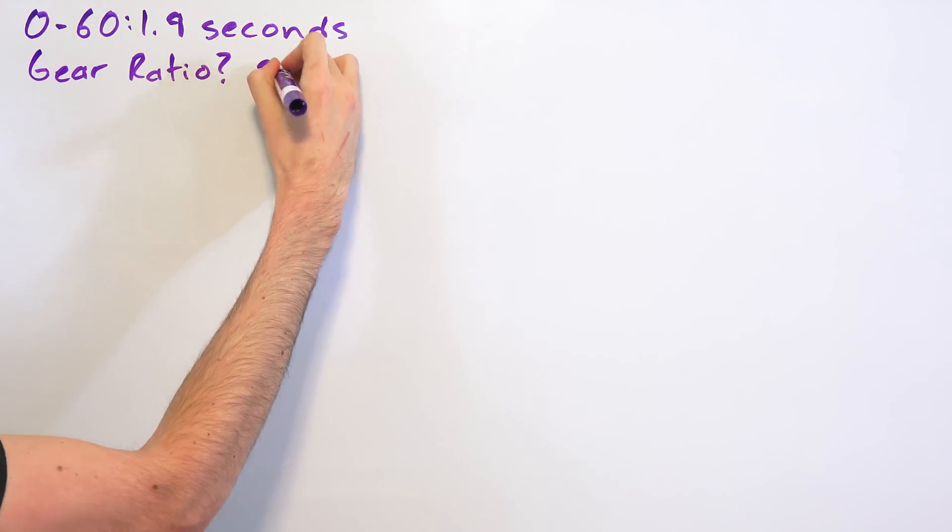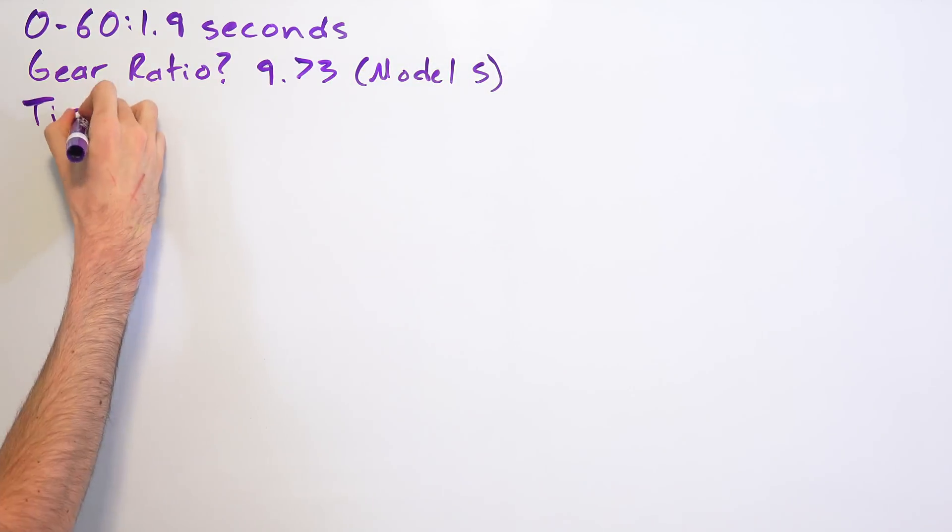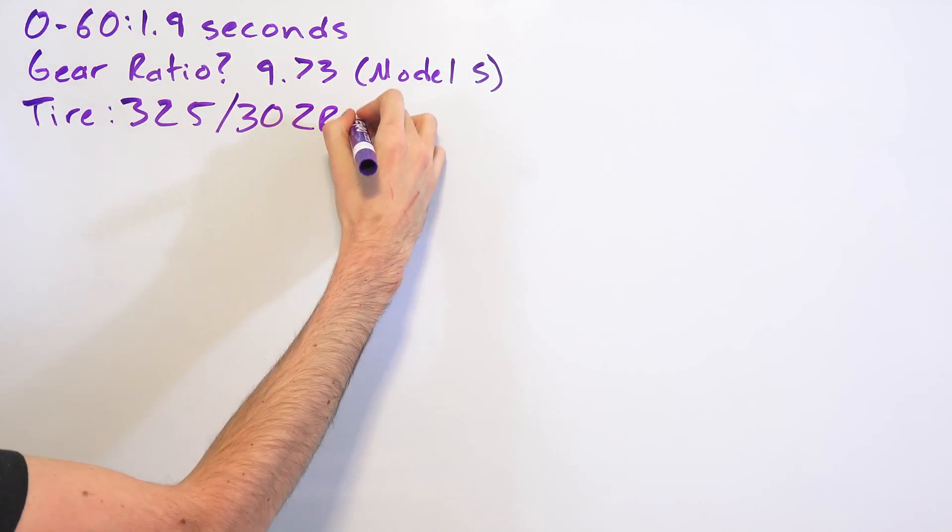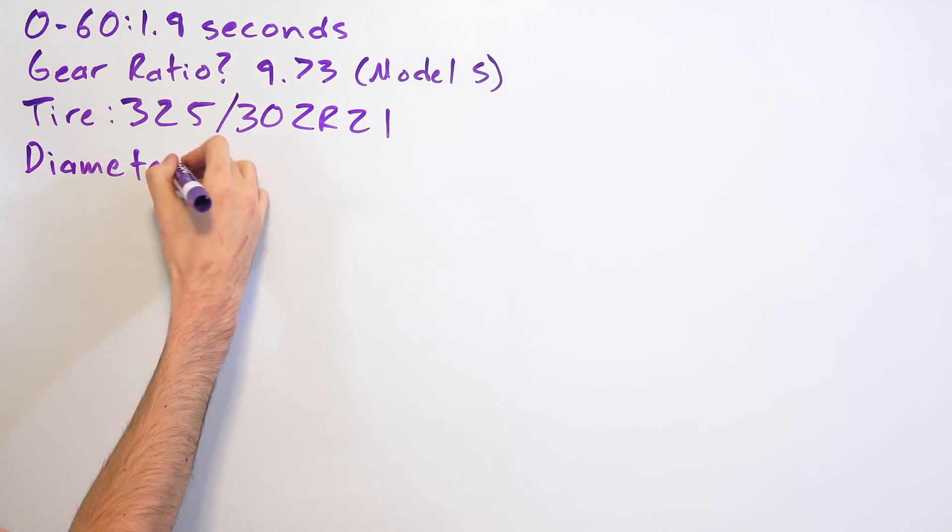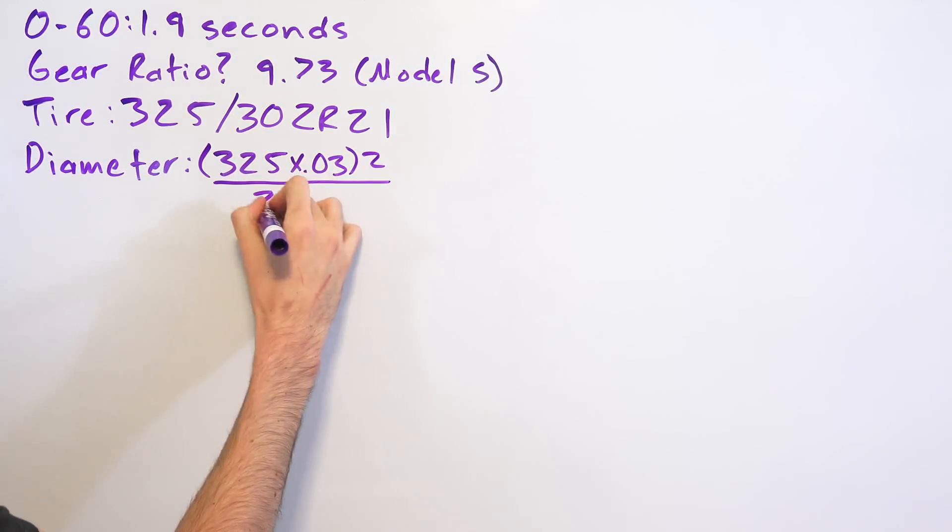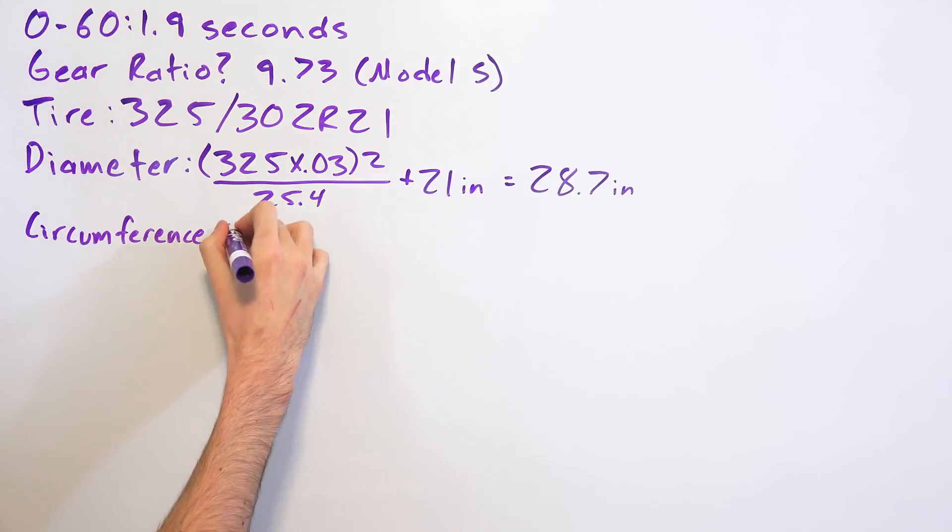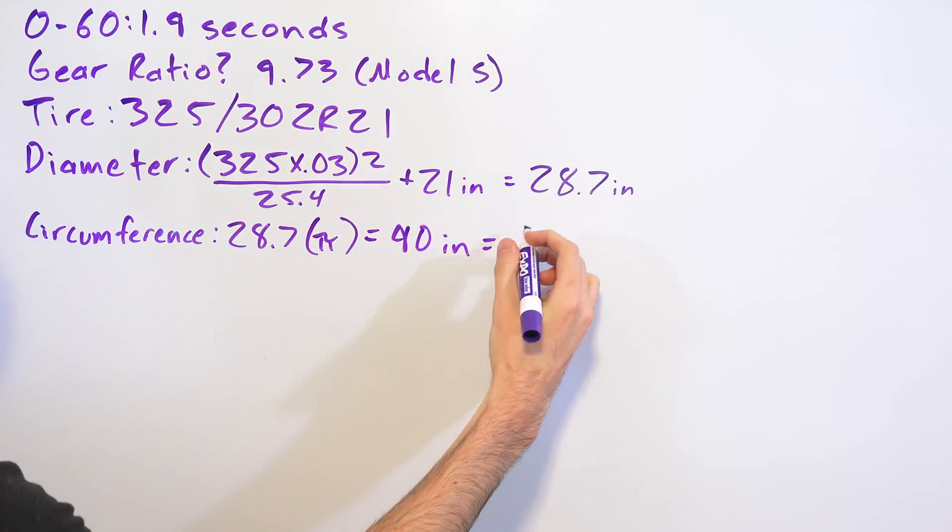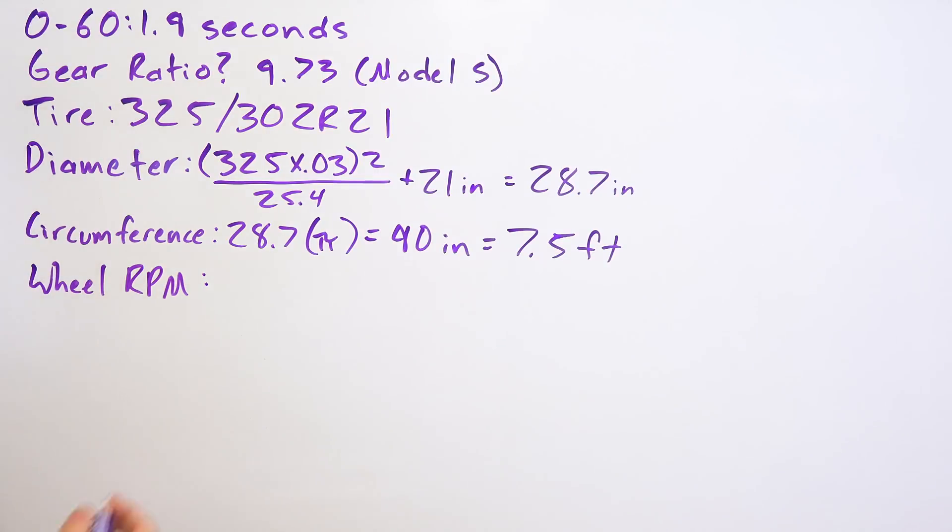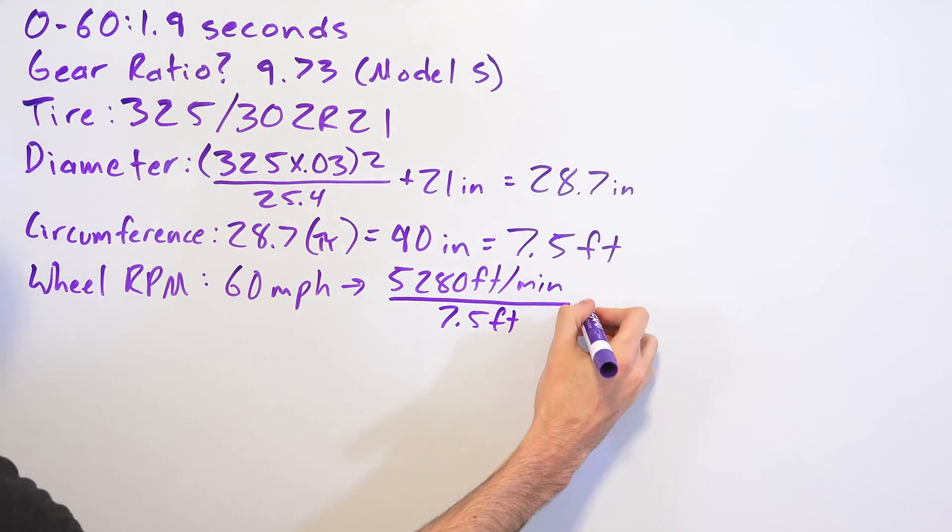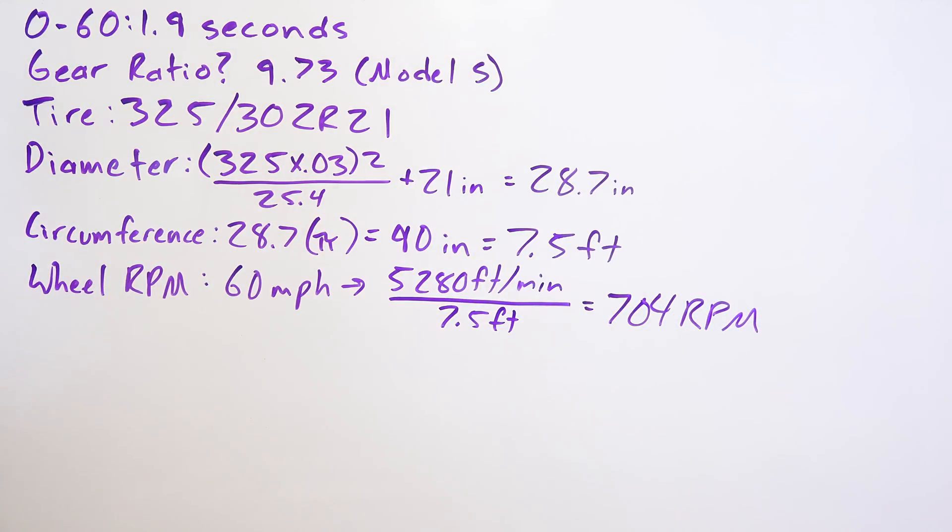Now the good news is Tesla didn't leave us completely without context with this 10,000 newton meter number. So we know that the car has a 0 to 60 of about 1.9 seconds. We know that it hits the quarter mile in about 8.8, 8.9 seconds. So we do have some data and we do know that the car is actually going to be extremely fast. So we can look at the tires that were on the prototype, we can get the diameter of those tires, and if we assume a gear ratio of 9.73 to 1 like is used in the Tesla Model S,